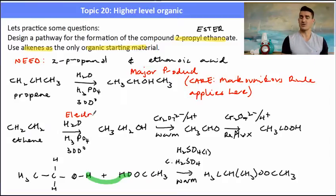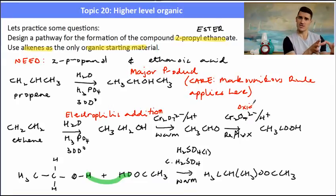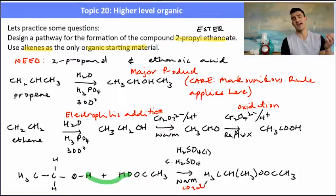Then the second question they might ask you is to identify the types of reactions that have happened in that series. So from ethane to the alcohol that's an electrophilic addition reaction. Then changing from the alcohol to the acid that's an oxidation process. And then to create our ester that was a condensation reaction.